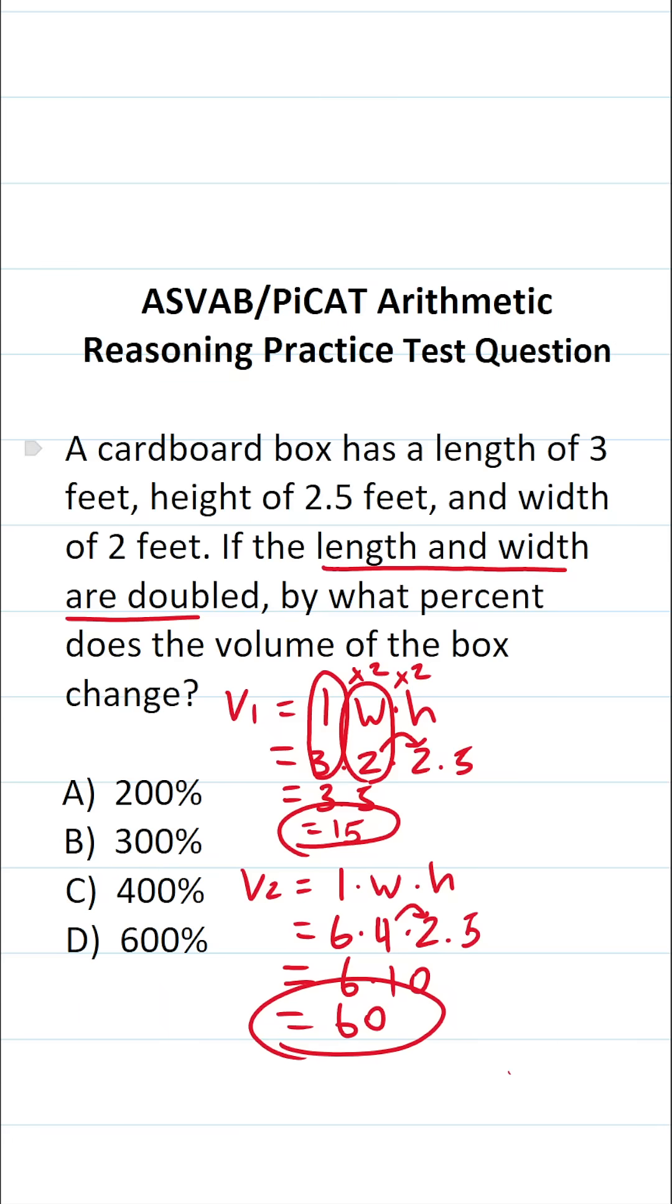Now, we want to know by what percent does the volume of the box change. So we're going to use the percent change formula, which says take your new value, subtract that by your old value, divide that by your old value, and multiply that by 100 to get your percent. So let's go ahead and do that.